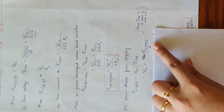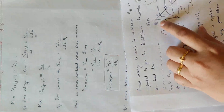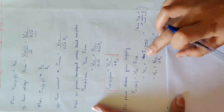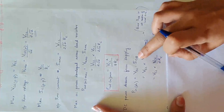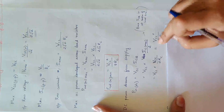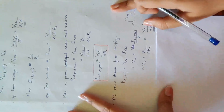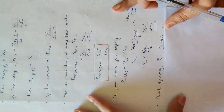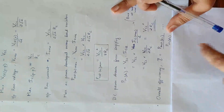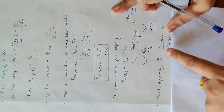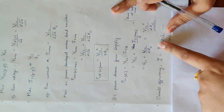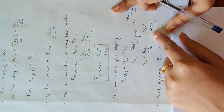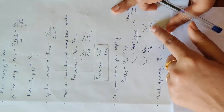IC maximum is VCC/RC, so IC maximum divided by 2 gives ICQ equals VCC/2RC. Substituting: P_in_DC equals VCC squared by 2RC. This is the DC power drawn from supply. Now we set up the overall efficiency equation: output AC power VCC squared by 8RC divided by input DC power VCC squared divided by 2RC.